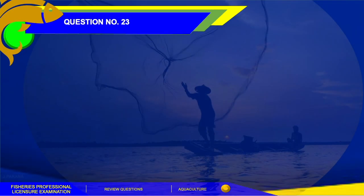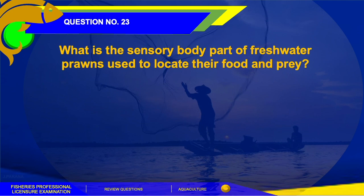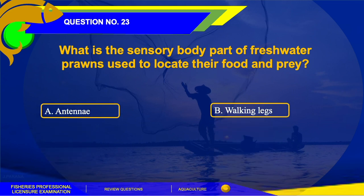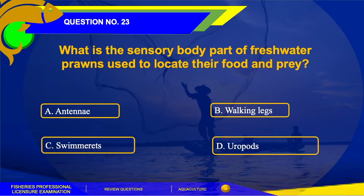Question number 23. What is the sensory body part of freshwater prawns used to locate their food and prey? The options are: A. Antennae, B. Walking legs, C. Swimmerets, or D.Uropods. The answer is letter A, antennae.